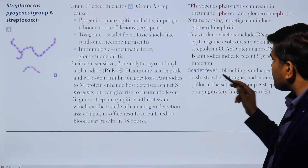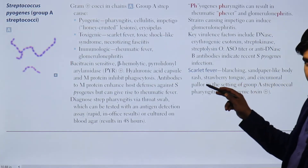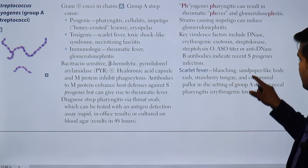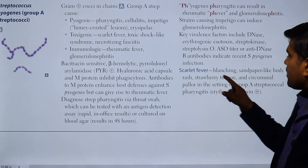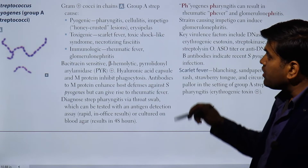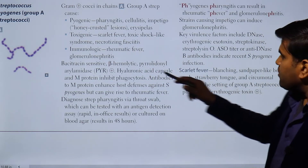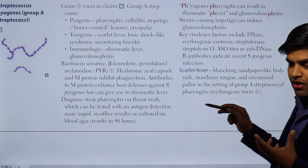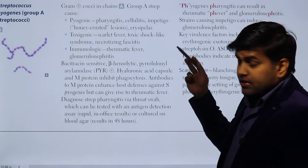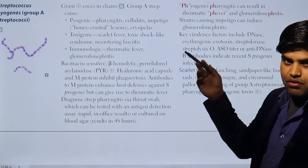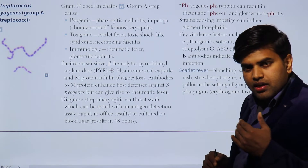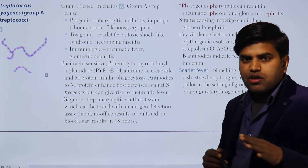Toxigenic diseases caused by Streptococcus pyogenes include scarlet fever. Scarlet fever presents as a blanching, sandpaper-like body rash with a strawberry tongue and circumoral pallor, occurring in the setting of Group A Streptococcus pharyngitis. It can also cause toxic shock-like syndrome, similar to that of Staphylococcus, but the lesion will be painful. There will also be necrotizing fasciitis.